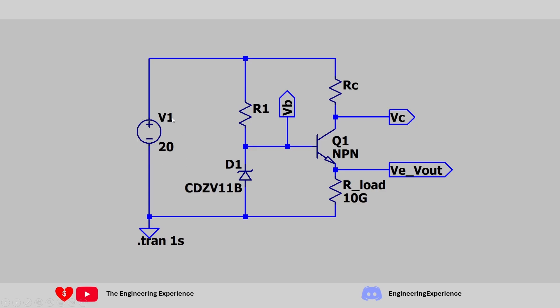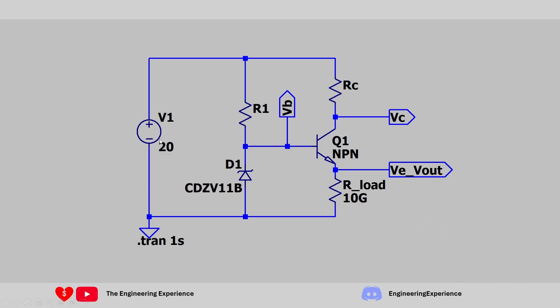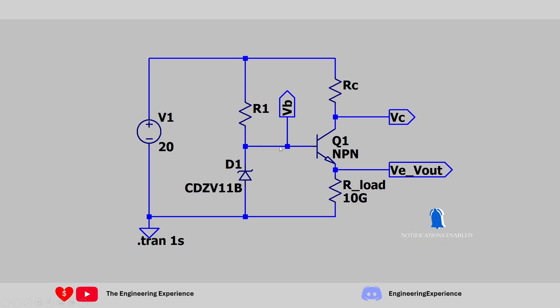We have our power supply which is 20 volts in this case, with a maximum of 25 volts. Looking at this part, the Zener diode will start conducting at 10 or 10.6 volts depending on the Zener diode selected, keeping the base voltage at 10.6 volts. The remainder of the voltage will be across R1 - with 20 volts in and 10.6 at the base, we get 9.4 volts on the resistor. From theory, the base-emitter voltage is roughly 0.6 volts, so Vout equals 10.6 minus 0.6, giving us an output voltage of 10 volts.